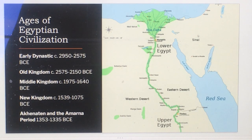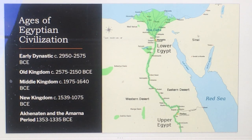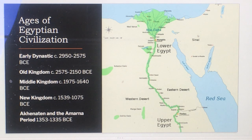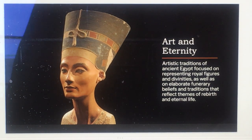The basic ages of Egyptian civilization include the Early Dynastic Period (approximately 3100–2686 BCE), the Old Kingdom (2686–2181 BCE), the Middle Kingdom (2055–1650 BCE), the New Kingdom (1550–1070 BCE), and the Amarna Period (1353–1335 BCE).